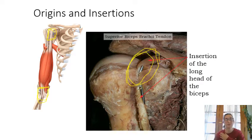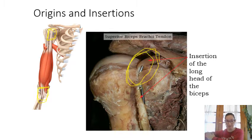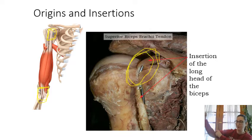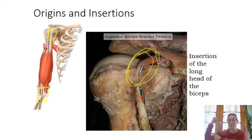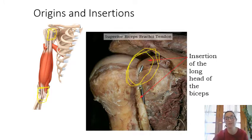The origin is usually the stable point; the insertion is on the bone that's actually going to be moving. For the biceps brachii, it originates up on your shoulder but inserts down on your radius. When I flex my biceps, that pulls the radius closer, closing the angle of the joint — it flexes the joint. So by contracting that muscle, I'm pulling the radius closer to where the muscle originates. Origin is the stable point; insertion is the point that's moving.